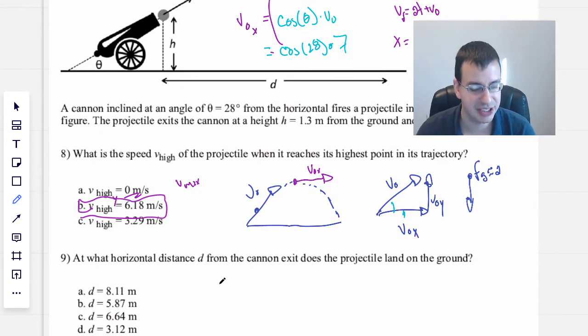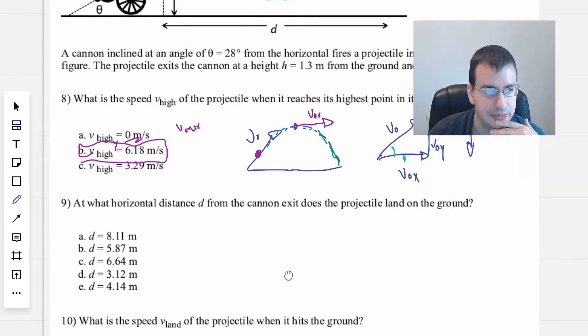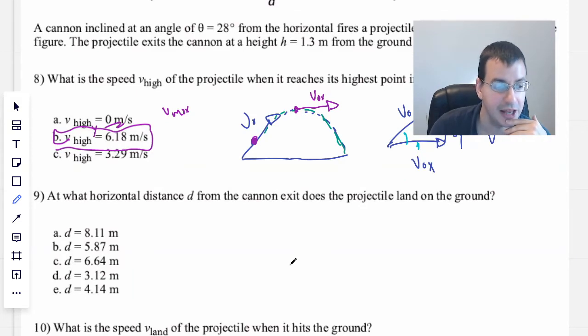At what horizontal distance d from the cannon exit does the projectile land on the ground? So going based on this picture up here, object starts here. I'm going to find out how far it goes.